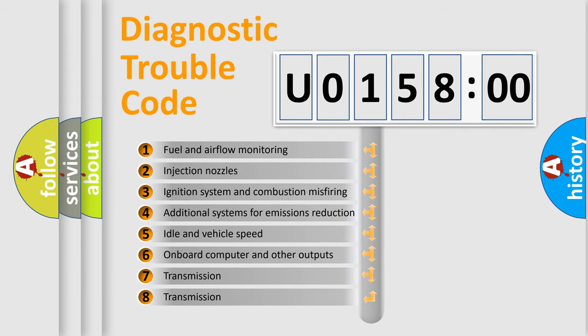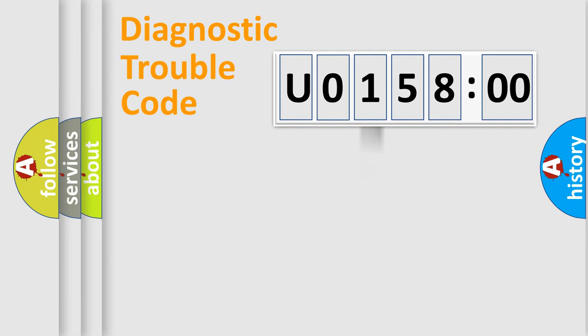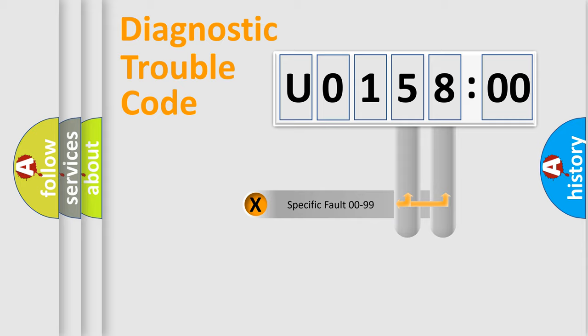The third character specifies a subset of errors. The distribution shown is valid only for the standardized DTC code. Only the last two characters define the specific fault of the group.